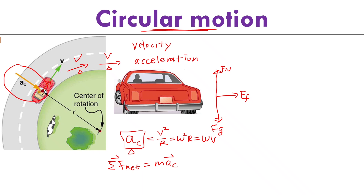From Newton's second law, the net external force should have the same direction as your acceleration, so your net external force should also point to the center. Because this net external force always points to the center, we call this net external force centripetal force. This is where centripetal force comes from.